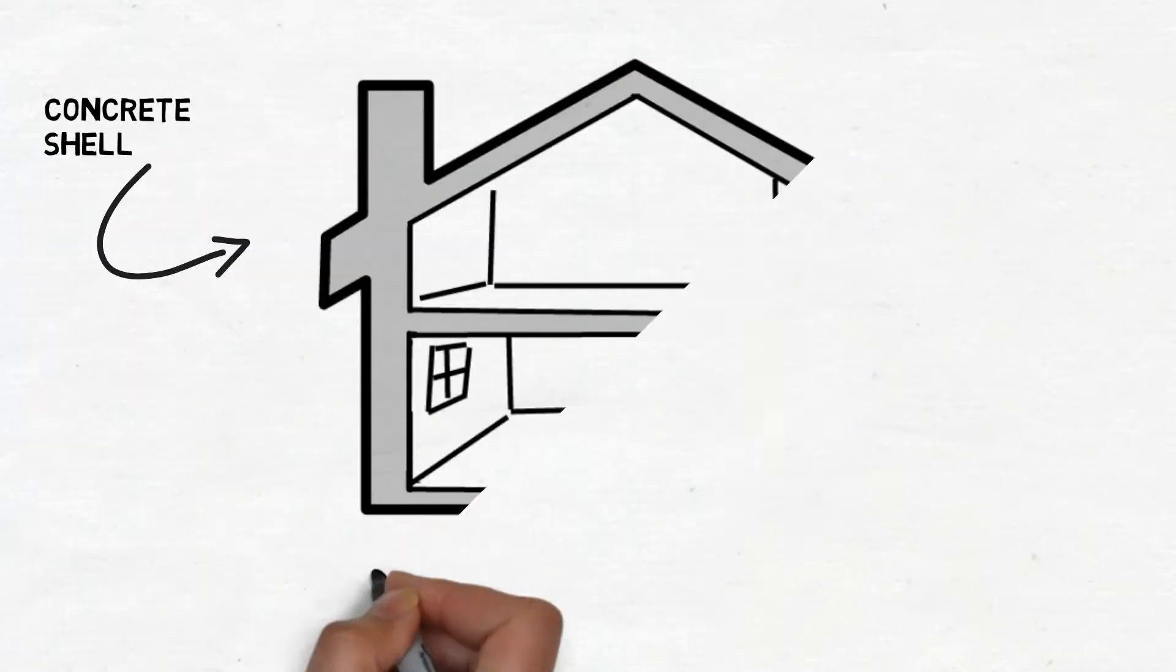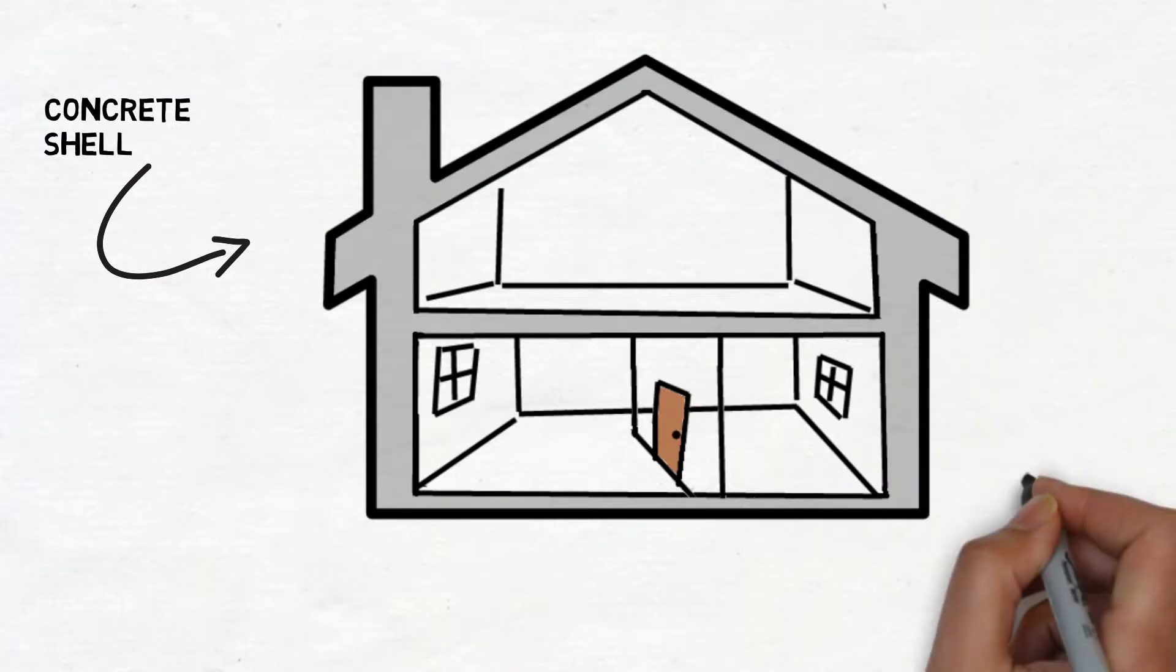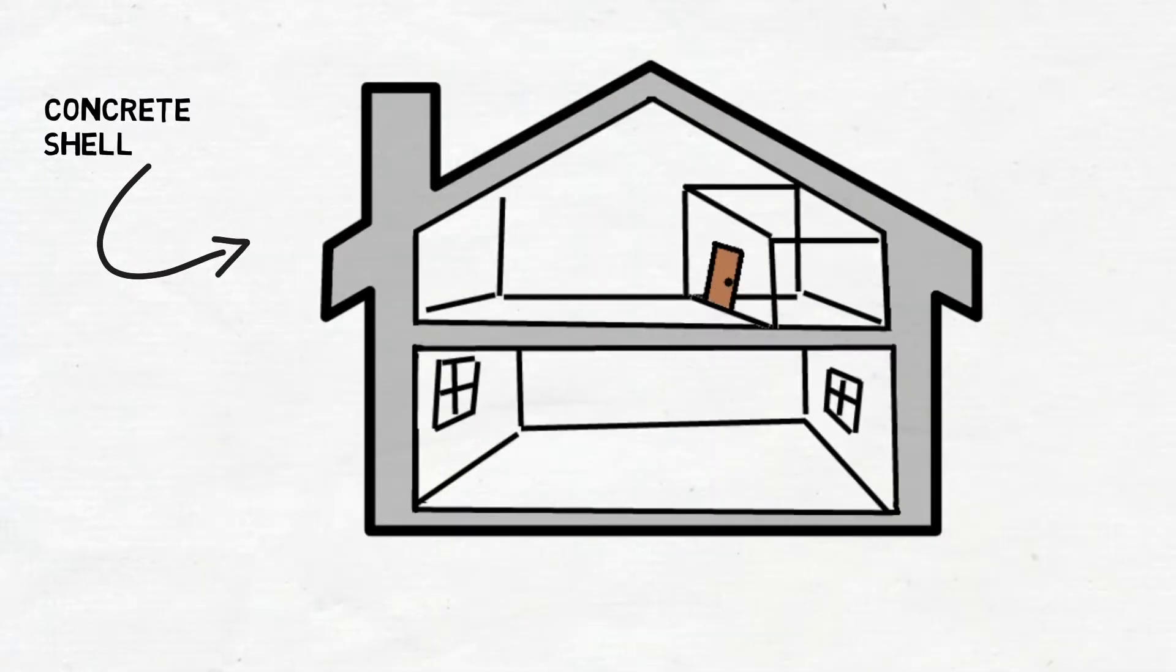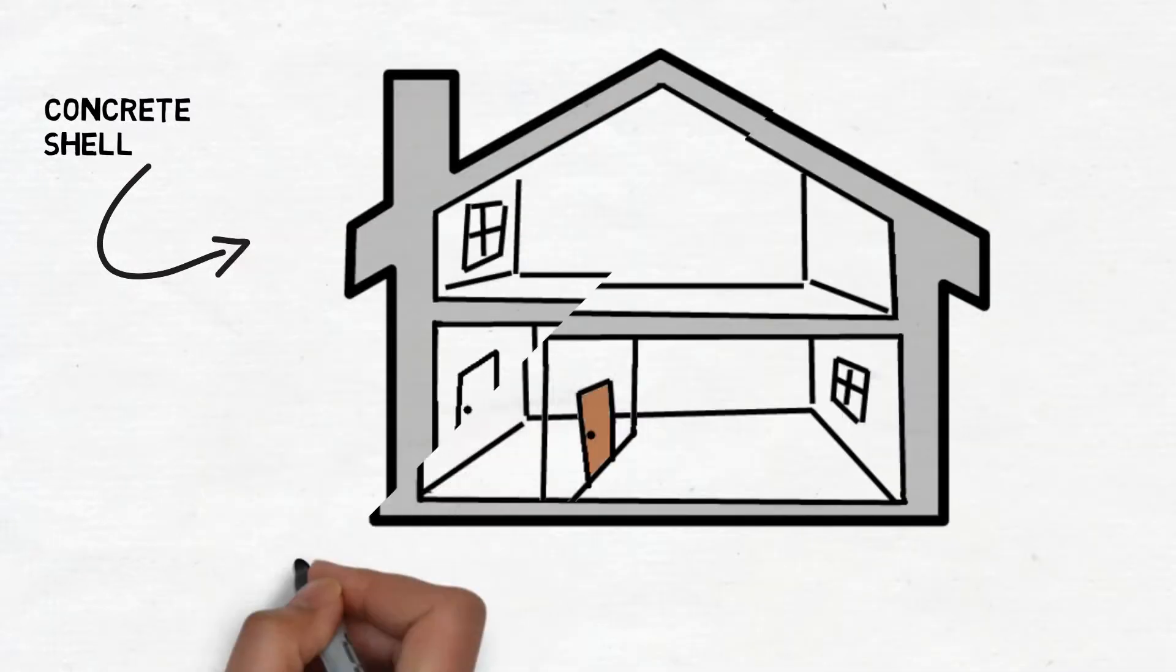Interior walls can be moved around at will because the exoskeleton provides the necessary support. Thus, you can have 35 to 40-foot spans with no walls.